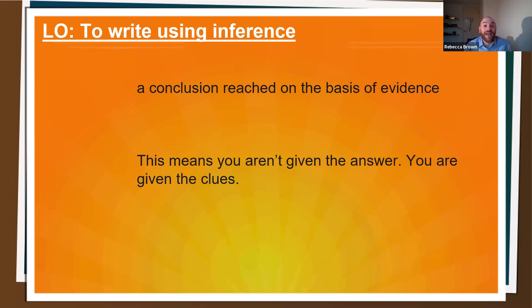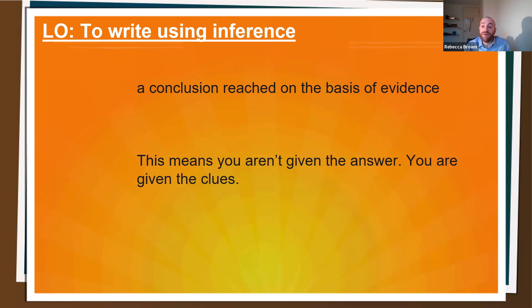Inference is a conclusion reached on the basis of evidence. It really means that you've made your mind up about what you're reading based on what you've seen or read in a book, or what you've seen in real life. This means that you're not given the answer, but you are given the clues, and then you've used your own mind to decide — using those clues — what's actually really going on.